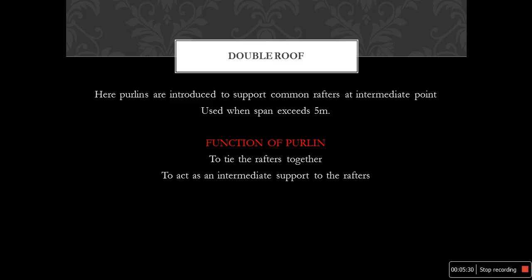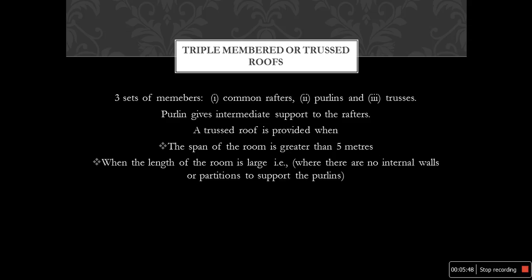When the span exceeds 5 meters, a double roof is provided. The functions of purlins are to tie the rafters together and to act as intermediate supports to the rafters. Triple-membered or truss roofs have three sets of members: common rafters, purlins, and trusses. Purlins give an intermediate support, as already discussed in the double roof.